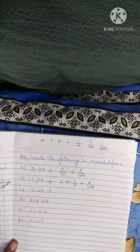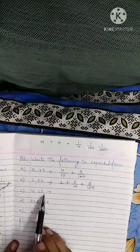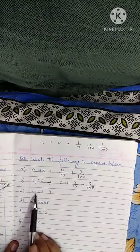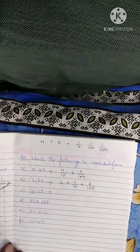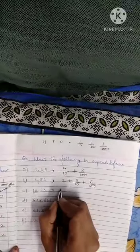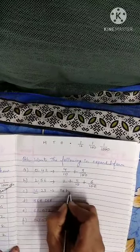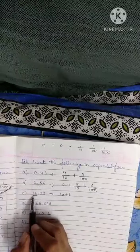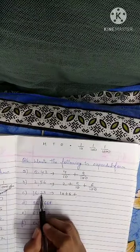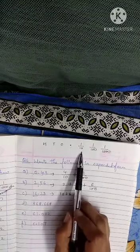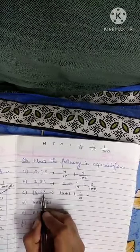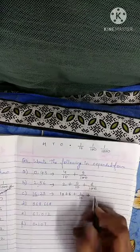Now this is 16.23. Before decimal what is there — 16. How do we write 16 in expanded form — 10 plus 6, because it is before decimal. In place of decimal I am putting the addition sign. After decimal what is there — 2, which comes at the tenths place, so 2 upon 10. Plus 3 will come at the hundredths place, so 3 upon 100.